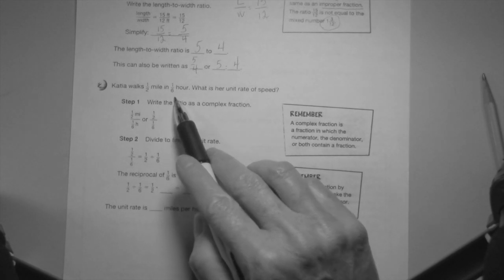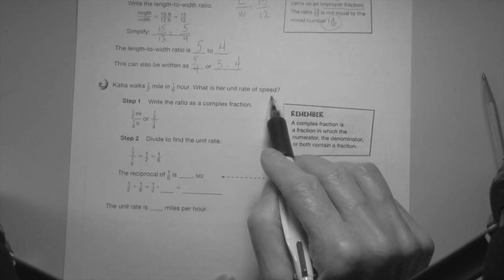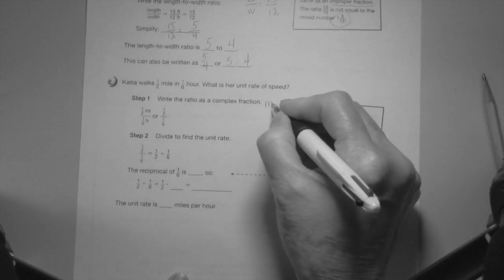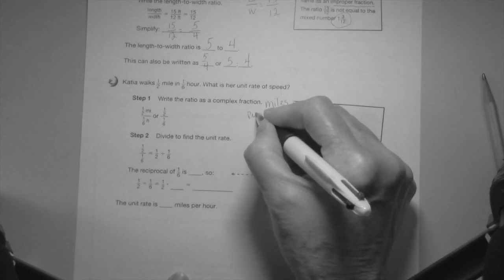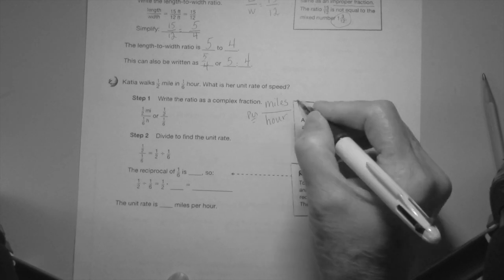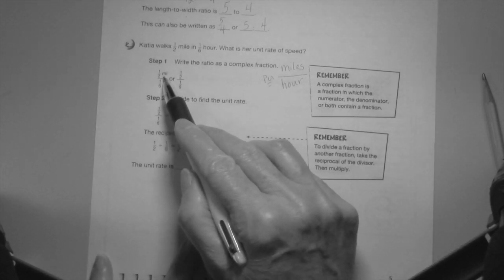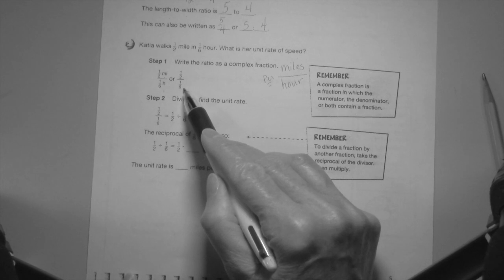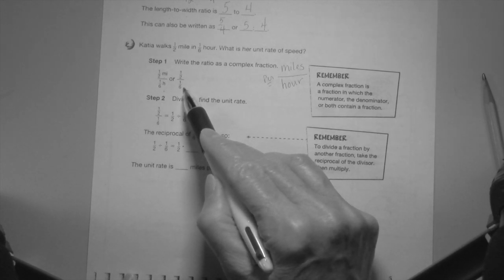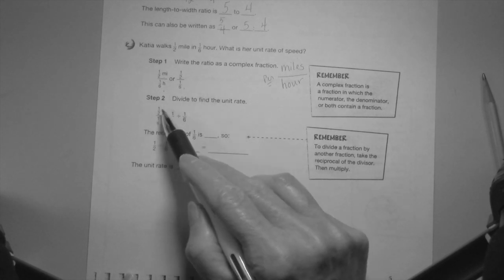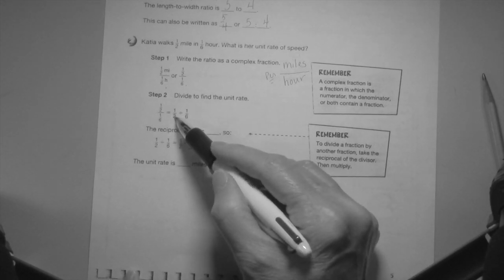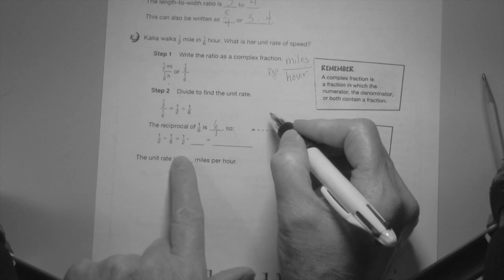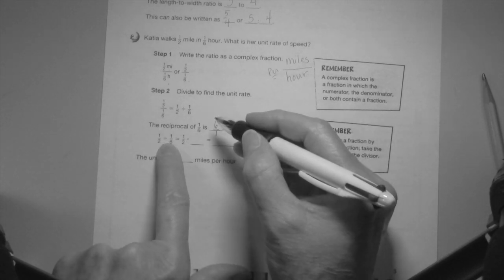Kate walks a half a mile in one sixth of an hour. What is her unit rate of speed? Unit rate of speed. It is miles per, this line is key, per hour. We write half a mile in one sixth of an hour. So one half is going to be divided by one sixth. Remember your sixth grade math, when you divide fractions it's keep change flip. So one half divided by one sixth, the reciprocal of one sixth is six over one.